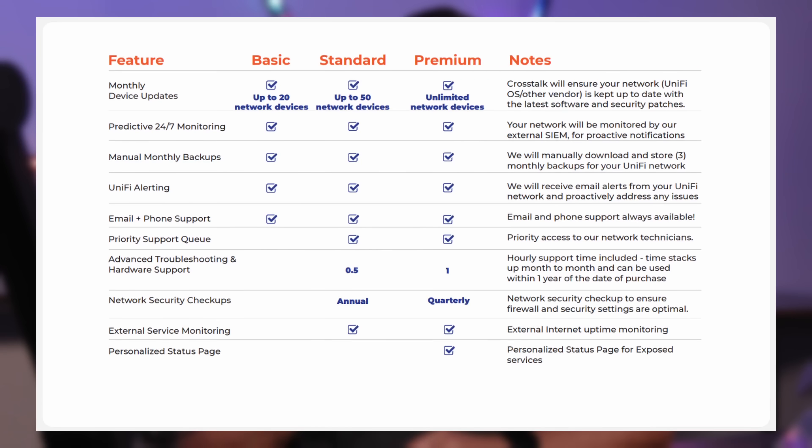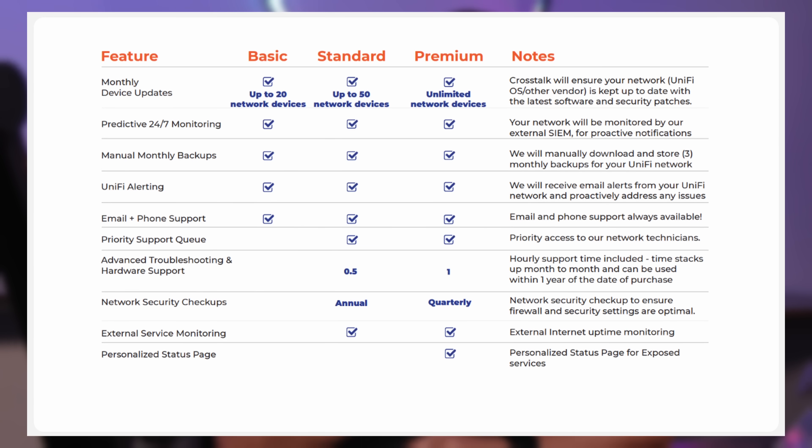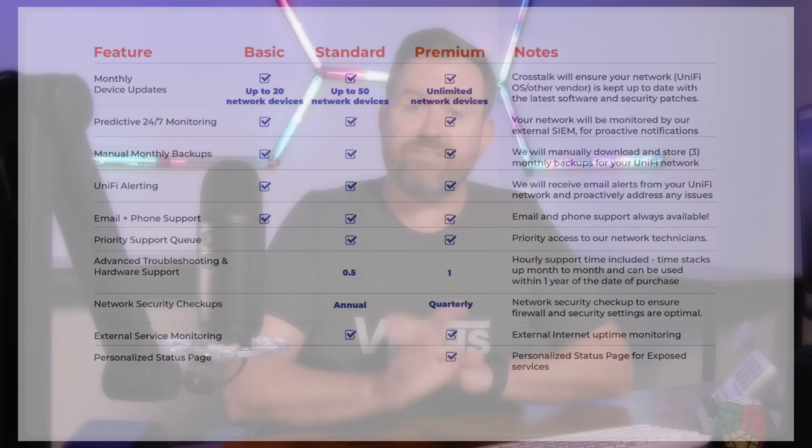We just launched a new managed network service where we will fully update and monitor your network for you and respond to any outages as quickly as possible. As part of these new managed network plans, we wanted to find the absolute best and most feature-rich yet cost-effective solution to monitor external services and connections, notify us via email, SMS, Discord or Slack, and even provide value-added services to our customers, such as personalized status pages for their services. I'm going to talk to you about a couple of different solutions — one paid and one open-source that you can implement in your own environment.